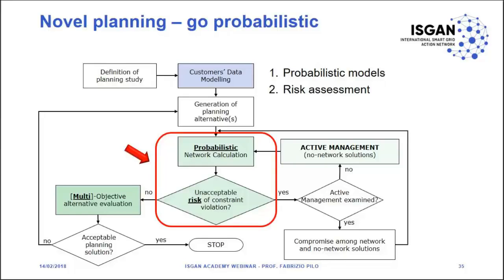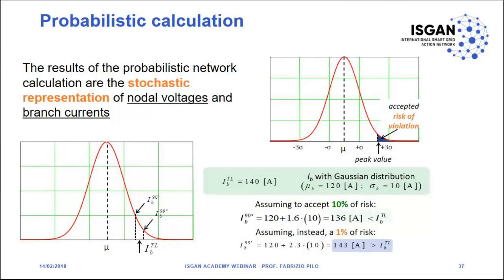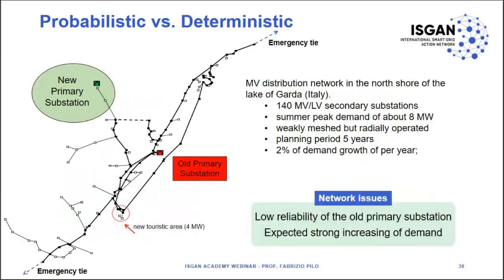Another important point is probabilistic calculation. There are different ways to approach probabilistic models: we can use probabilistic load flow, Monte Carlo simulation, or fuzzy set theory. What is really important is that we can manage risk in an objective way. Establishing the level of acceptable risk is not easy, but we can define it in advance. This is a real example from Italy: a distribution network at Lake Garda with 140 medium-voltage to low-voltage secondary substations, a demand of about 8 megawatts, a weakly meshed but radially operated network, and a 5-year planning period with 2% per year demand growth.